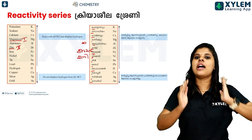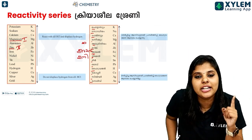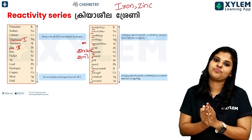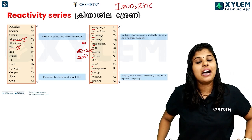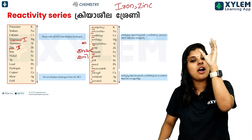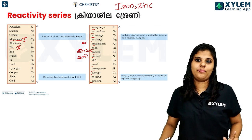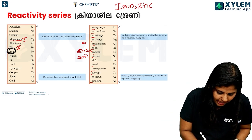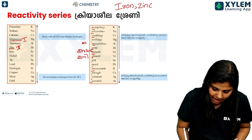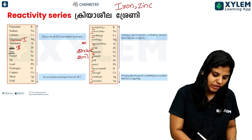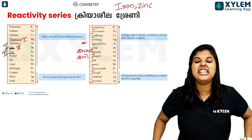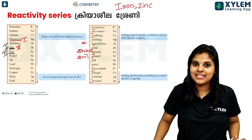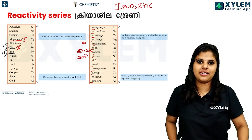In the reactivity series, metals higher up react faster. So zinc reacts faster than iron in HCl. If we compare zinc and iron, zinc shows a faster reaction. Zinc is the faster reactor here.